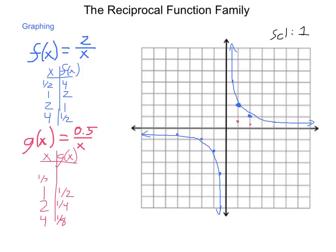What happens if we put in one-half? One-half divided by one-half is 1. If we put in one-quarter, one-half divided by one-quarter is 2. If we put in the negatives, we get the corresponding negative values: negative one-quarter gives negative 2, negative one-half gives negative 1, negative 2 gives negative one-half, and so on. We draw in the two branches of this function as smoothly as possible.